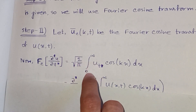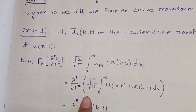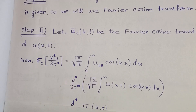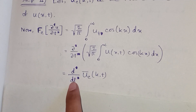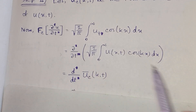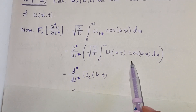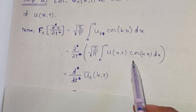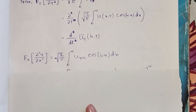This will be √(2/π) times the integral from 0 to ∞ of u_t · cos(kx) dx. Now we take the ∂/∂t part out of the integration, and it becomes d/dt of ū_c(k, t), because this whole integral is the Fourier cosine transformation of u(x, t). Next we will find F_c of ∂²u/∂x².